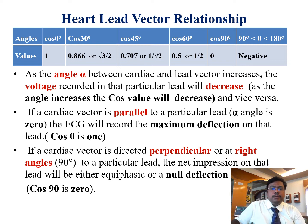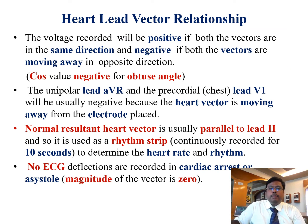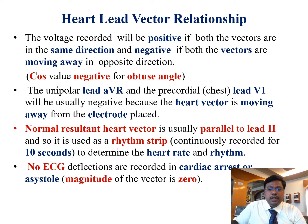As the angle between the cardiac and lead vector increases, voltage recorded in the particular lead will decrease, since the cosine value decreases. If the cardiac vector is parallel to a particular lead, maximum deflection is recorded because cos 0° equals 1. If the cardiac vector is perpendicular to a particular lead, the net impression will be equiphasic deflection because cos 90° equals zero. Voltage recorded is positive if both vectors are in the same direction, and negative if they move in opposite directions, since cosine is negative for obtuse angles. For example, AVR and V1 are usually negative because the heart vector moves away from those electrodes. Lead two is usually parallel to the heart vector and is used as a rhythm strip for 10 seconds to determine heart rate and rhythm. No ECG deflections are recorded in cardiac arrest because the magnitude of the vector is zero.